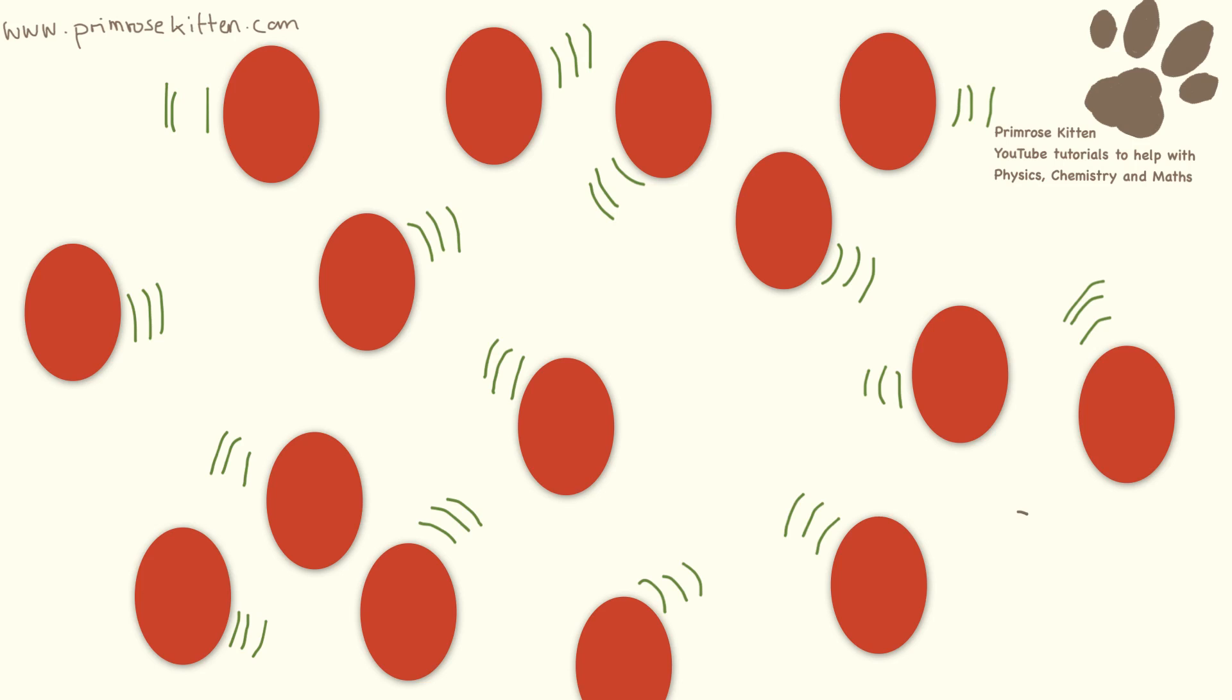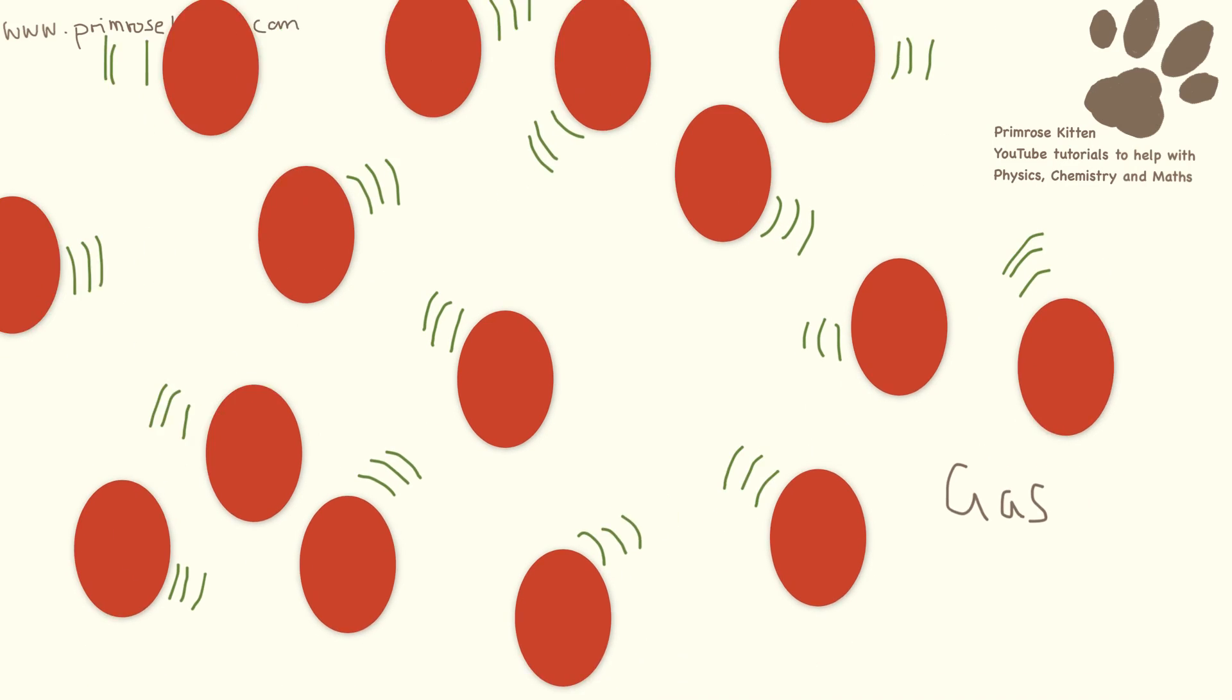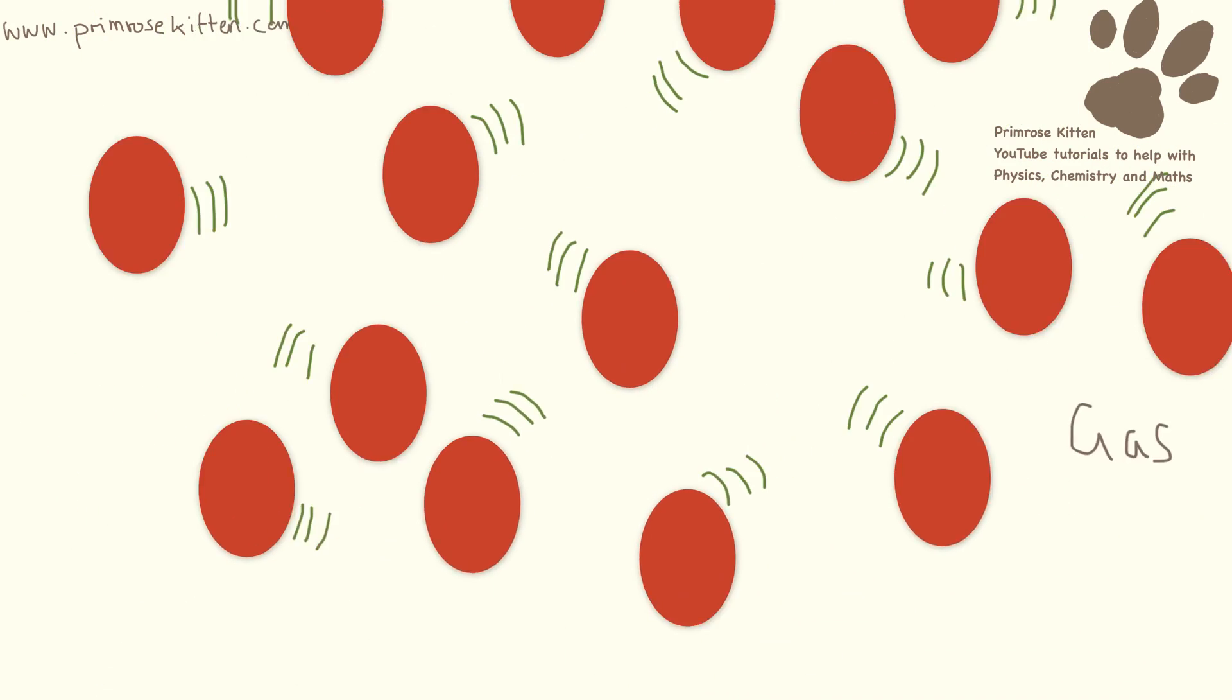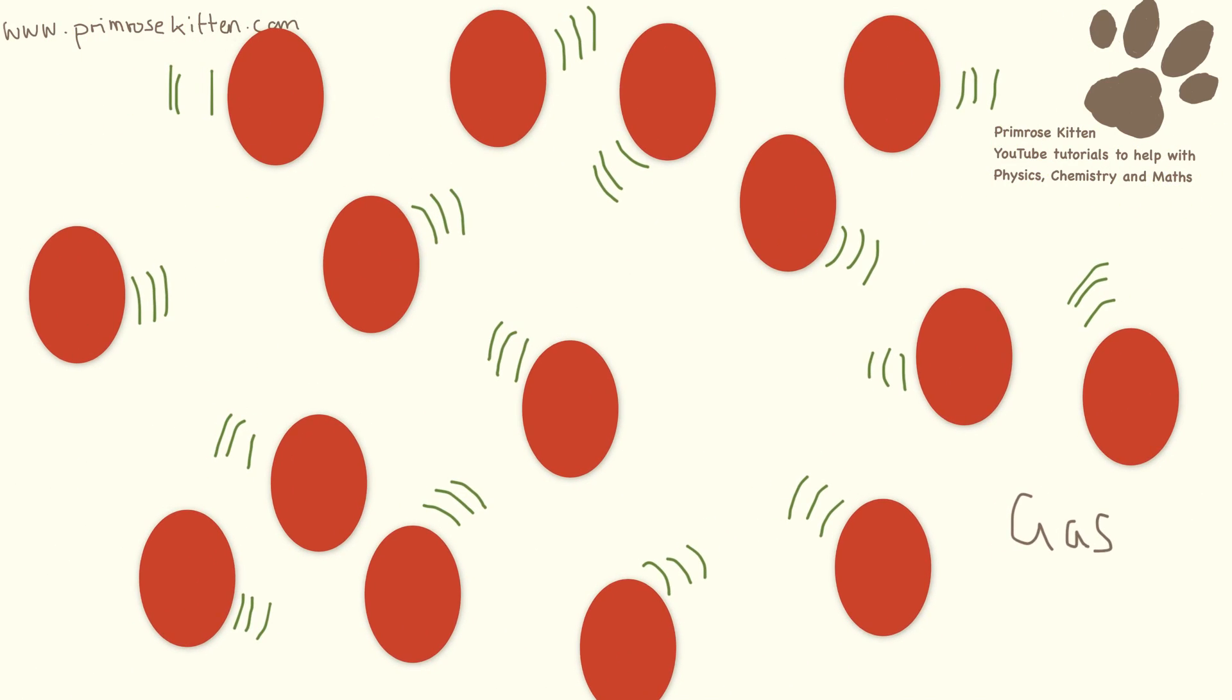And lastly, we have our gas. You'll notice there are big gaps between these, and I've put three little squiggly lines to indicate that gases really do move around quite a lot. So gases can flow, and they don't have a fixed volume or a fixed shape.